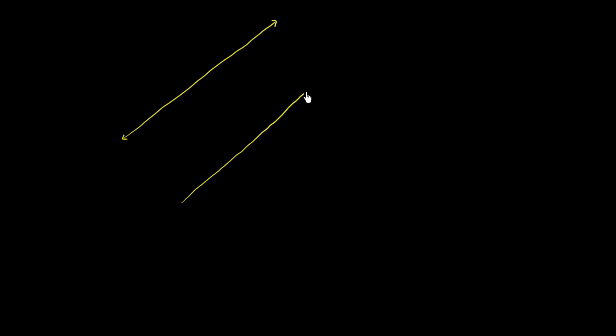Let's say that we have two parallel lines. So that's one line right over there, and then this is the other line that is parallel to the first one. So these two lines are parallel — this is the symbol right over here to show that these two lines are parallel.